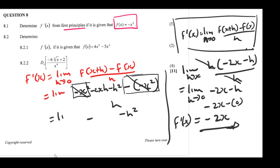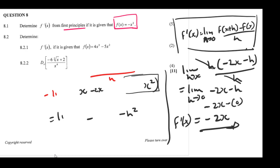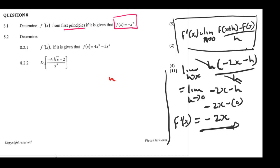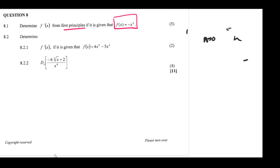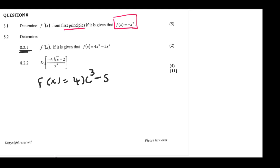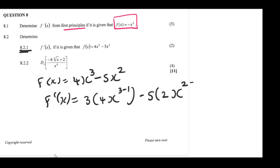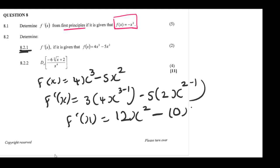We're done with 8.1. Now for 8.2.1, we are asked to find the derivative of f(x) = 4x³ - 5x². Using the power rule, we drop the exponents: 3 × 4 = 12 for the first term and 2 × 5 = 10 for the second term. The derivative is f'(x) = 12x² - 10x.